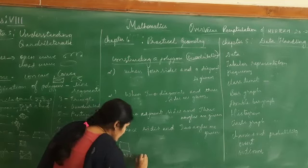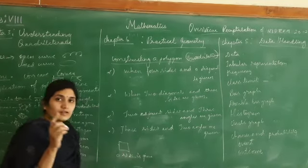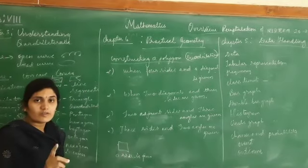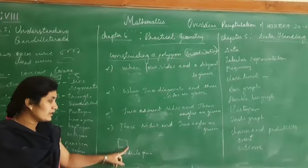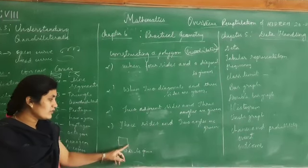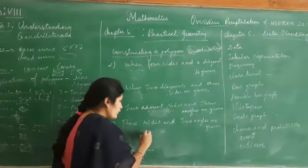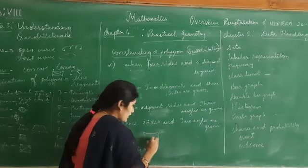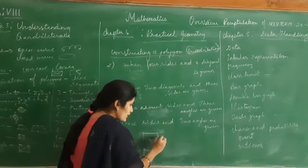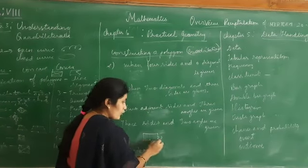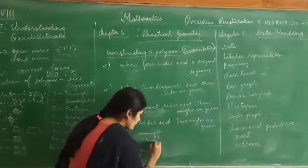To construct a square only one side measurement is needed. If the side is 5 cm, using 5 cm you can draw all four sides. If you need to construct a rectangle, two sides are needed - if one is 5 cm and the other is 3 cm, you can easily construct the rectangle.